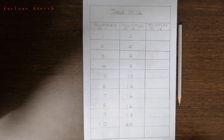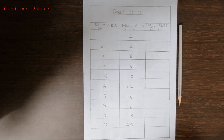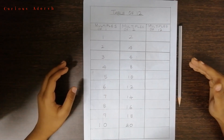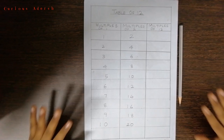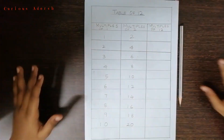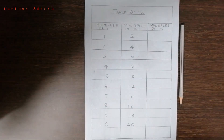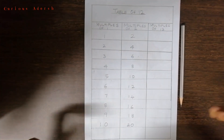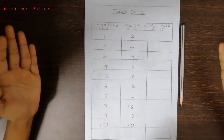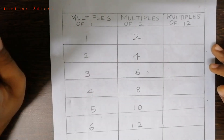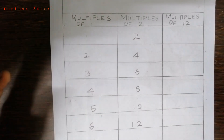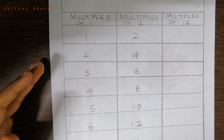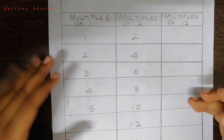Hello everyone, welcome back. Are you troubled to memorize the tables? That is no more needed. I have a simple logical trick for this. Let's see. Rule number one: always write the ones digit of the right side number first.